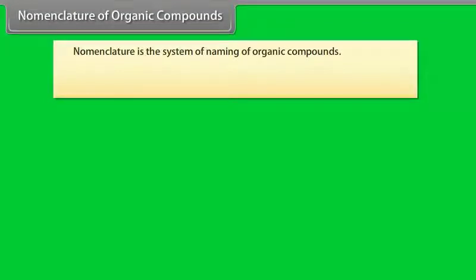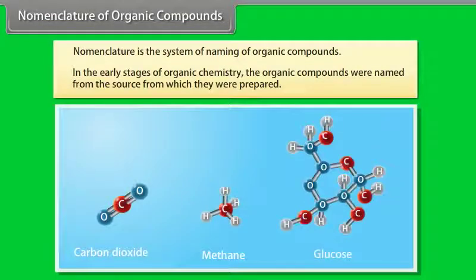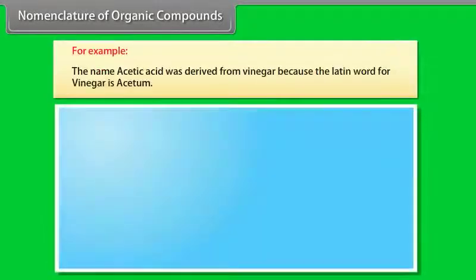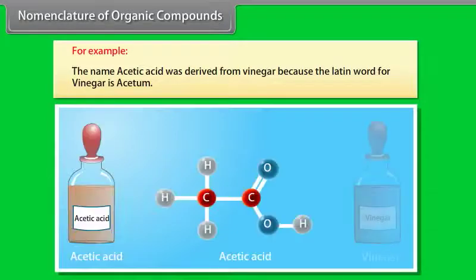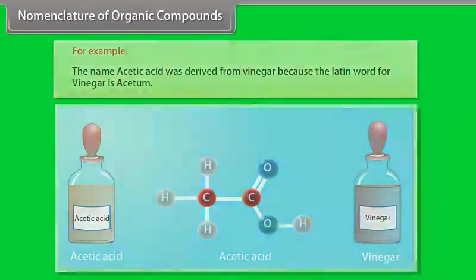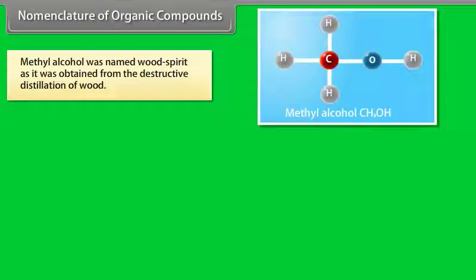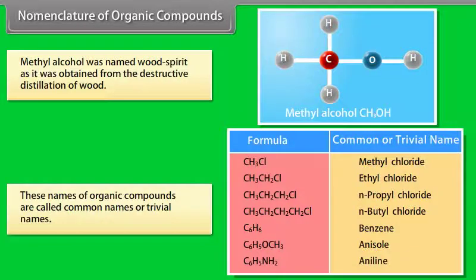Nomenclature of organic compounds. Nomenclature is the system of naming organic compounds. In the early stages of organic chemistry, compounds were named from their source. For example, acetic acid was derived from vinegar because the Latin word for vinegar is acetum. Methyl alcohol was named wood spirit as it was obtained from the destructive distillation of wood. These names are called common names or trivial names.